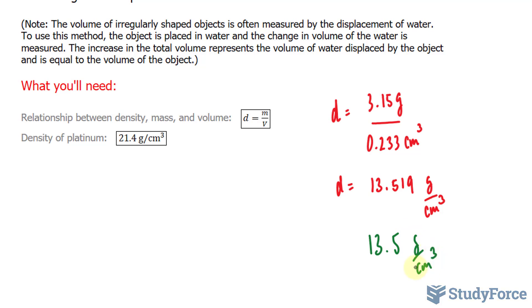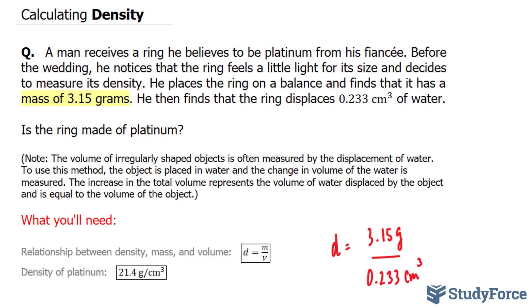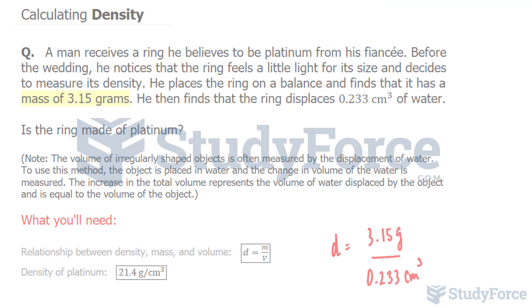The theoretical density of platinum is 21.14, therefore we can conclude that this ring is a fake. And that is how to calculate density.